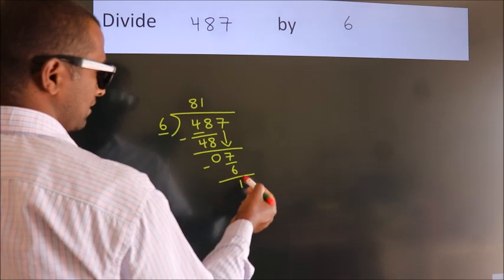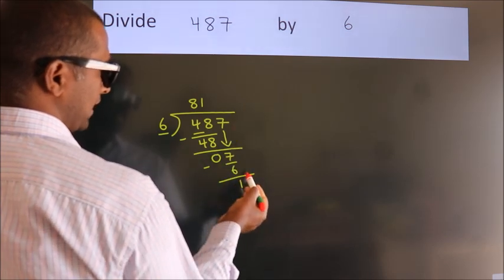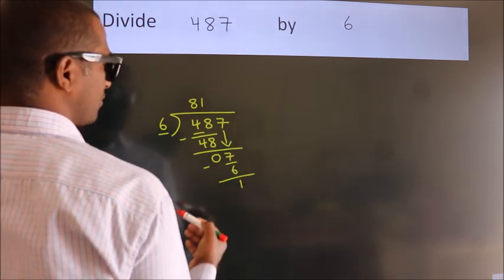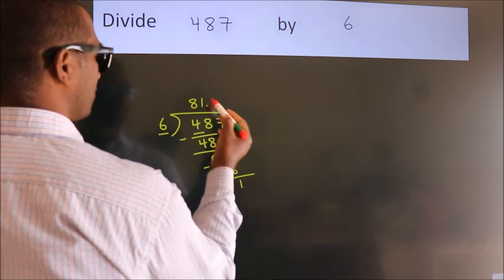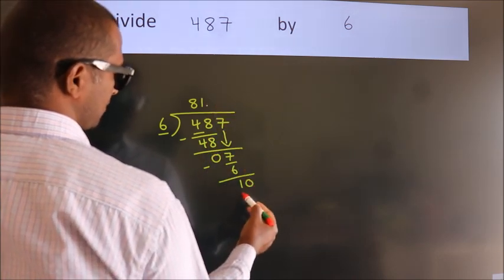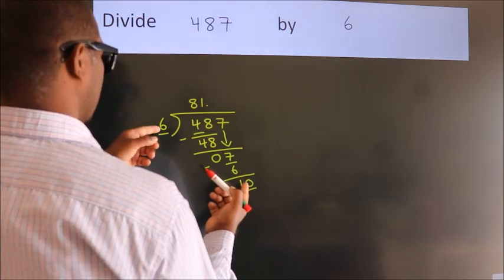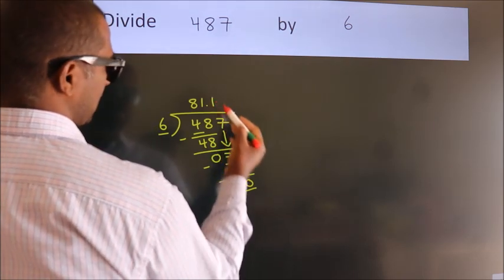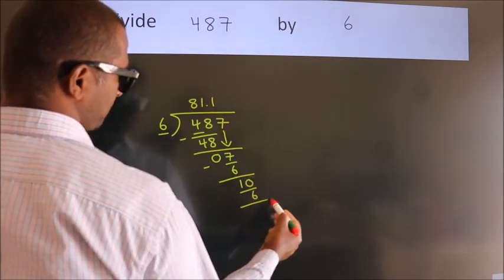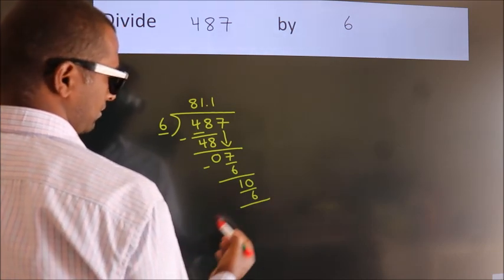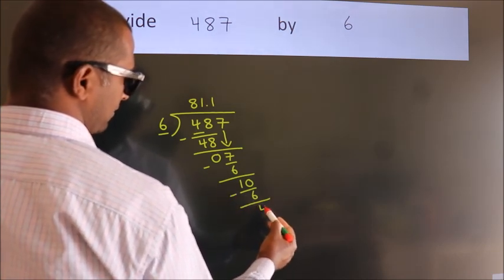After this, no more numbers to bring it down. So what we do is we put dot take 0. So 10. A number close to 10 in 6 table is 6 1's 6. Now we subtract. We get 4.